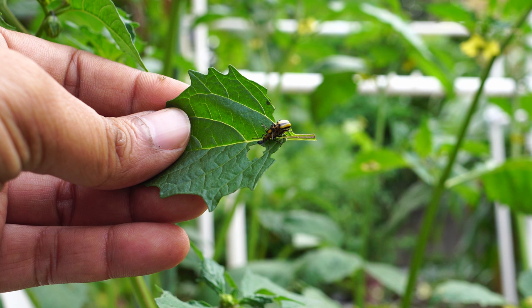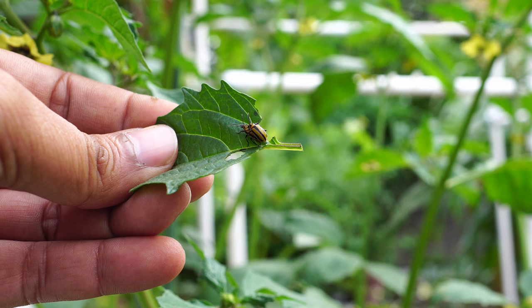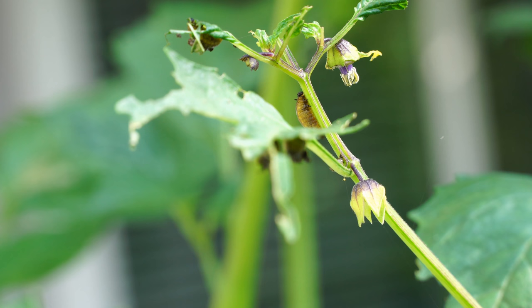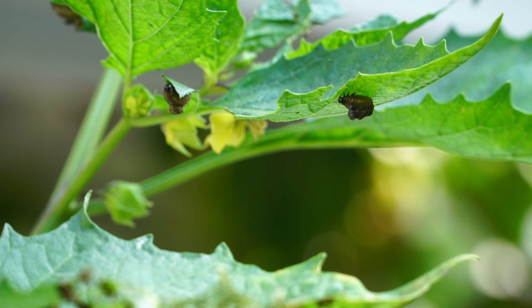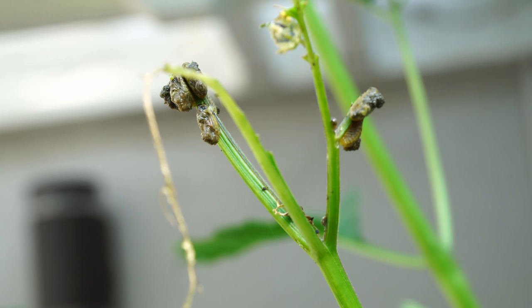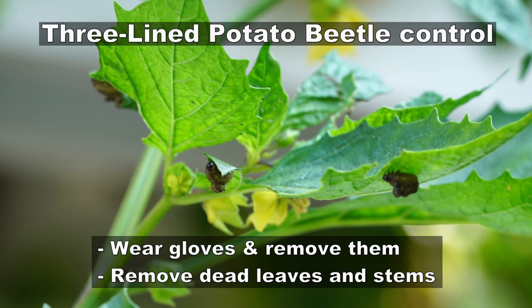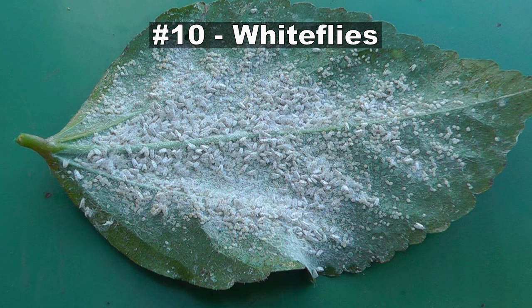The three-line potato beetle is a very damaging insect, not only on potatoes but on all plants in the nightshade family like tomatoes, eggplants, and peppers. Their larvae are soft and grub-like and do a lot of damage — as you can see here on the tomato plants, they've eaten all the leaves and stems around the area of feeding. To eliminate them, you can just hand pick them and cut off the damaged leaves and stem.